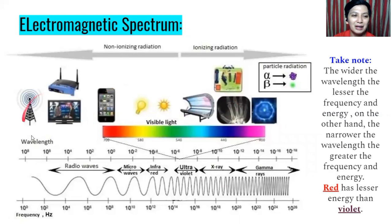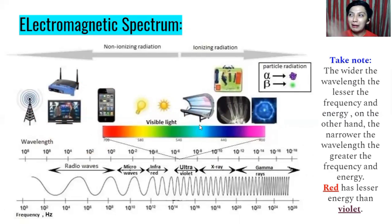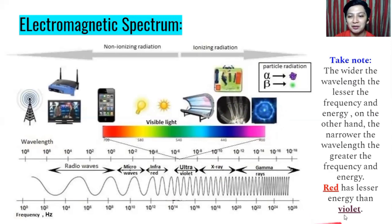Examples include radio waves used for telephone and television, visible light from sunlight and light bulbs, ultraviolet from the sun used in tanning, X-rays used to view inside our bodies, and gamma rays used in medicine for treating cancer cells — that is radiotherapy. Take note: the wider the wavelength, the lesser the frequency and energy. On the other hand, the narrower the wavelength, the greater the frequency and energy.